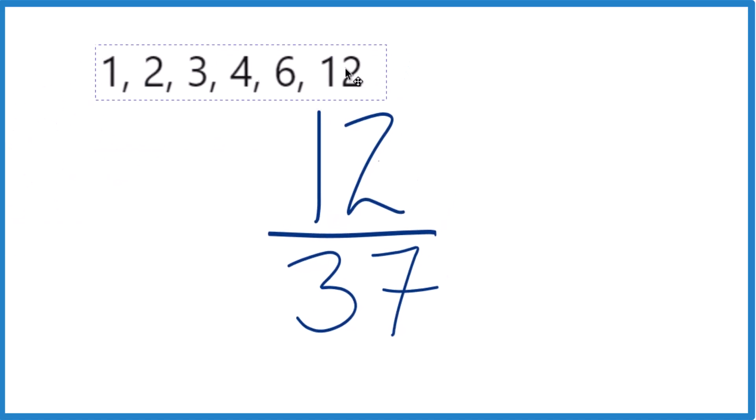So 12 is 1 times 12. That's 12. 2 times 6. And then 3 times 4. So those are our factors of 12.